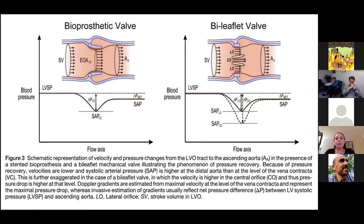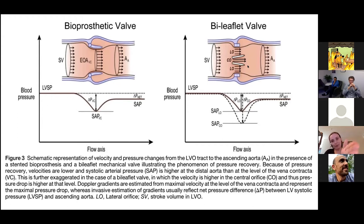If you take one message from this talk: you cannot base your assessment of prosthetic valves on gradient alone. Whereas with native valves you can largely look at gradient, velocity, and valve structure to make an accurate conclusion, that's not the case here — you don't know whether it's regurgitation with higher volumes causing a higher gradient. You actually need the acceleration time and the jet contour as well. Also be aware that for bileaflet valves, if your continuous wave Doppler sits in the narrow area between the leaflets, you'll get falsely high gradients.